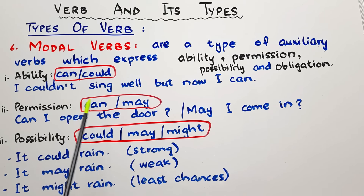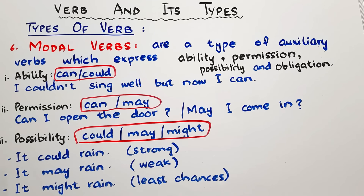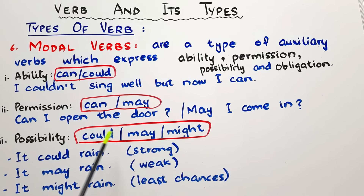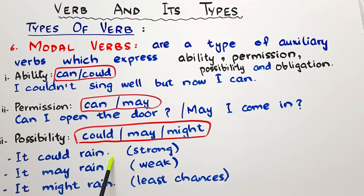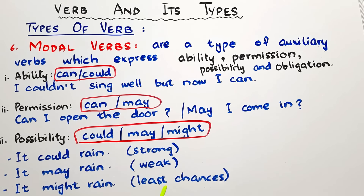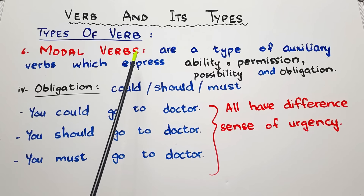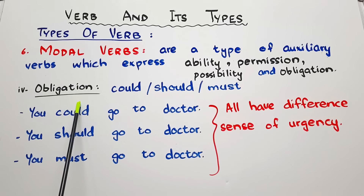Like if you want to ask an elderly person to move aside, you can say 'could you move.' For possibility, we can use 'could,' 'may,' and 'might.' The difference between these three is about intensity. 'It could rain' means it is likely to rain — the clouds are there. 'It may rain' is a less possible situation. And 'it might rain' is something that is least possible.